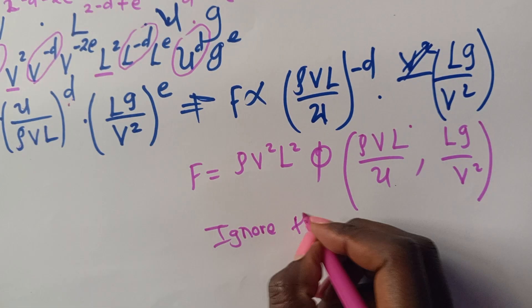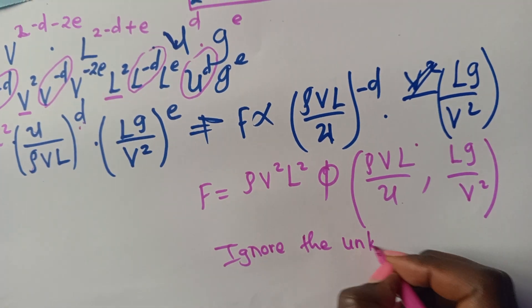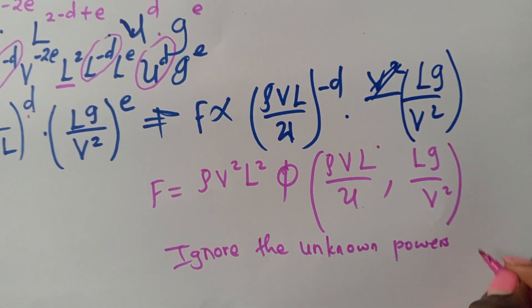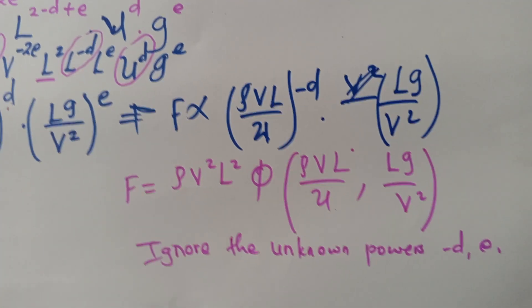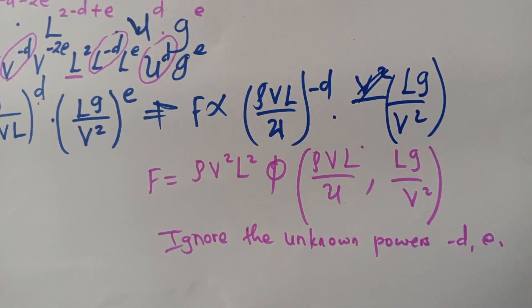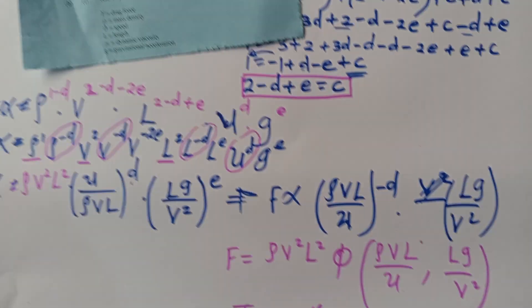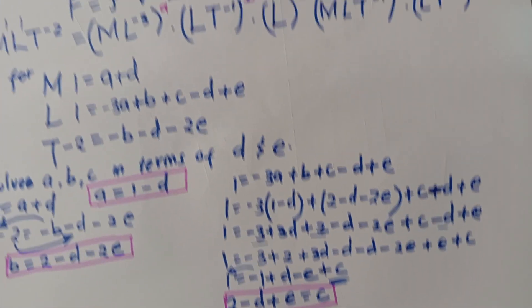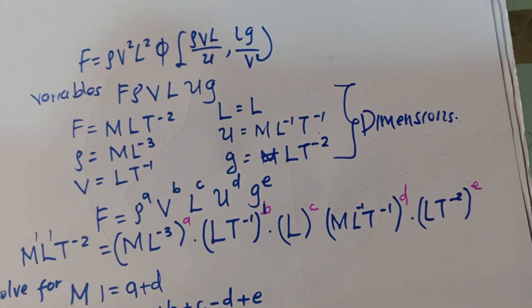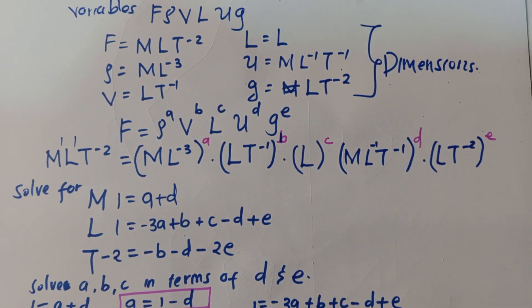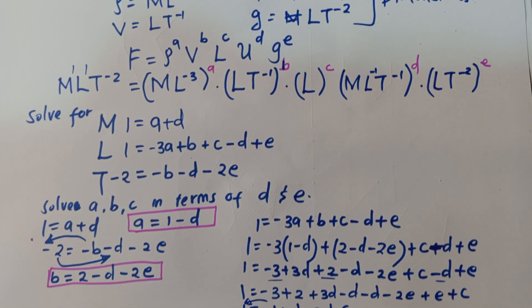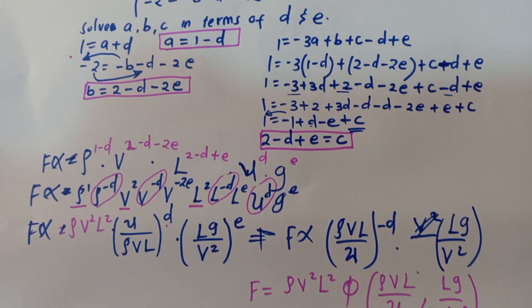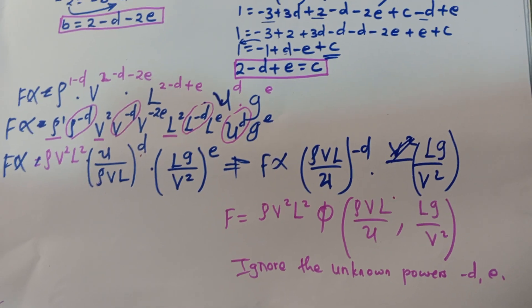The final result is: F = rho V² L² · f(rho V L / mu, LG / V²). We ignore the unknown powers — negative D and E — as they are absorbed into the function. This is Rayleigh's method of dimensional analysis. Thank you for watching; please comment any questions.